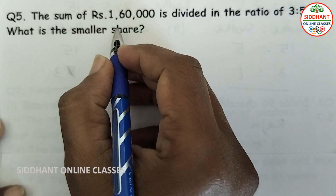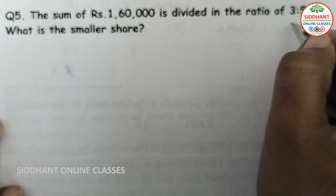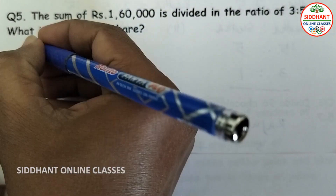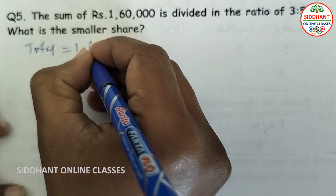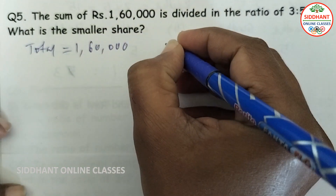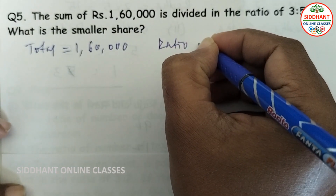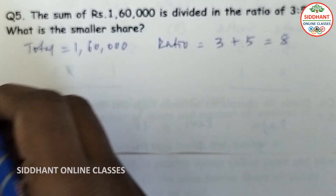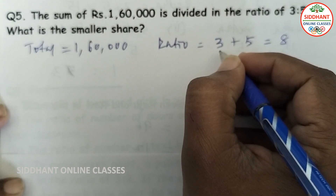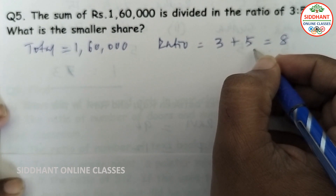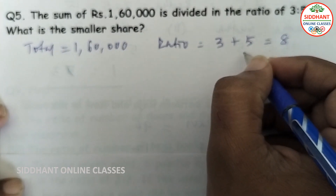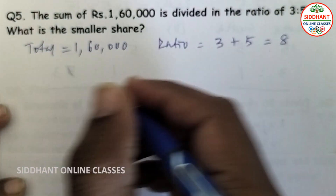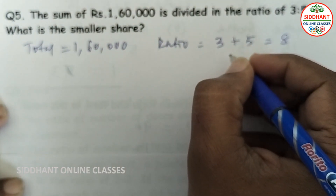Question number 5: A sum of rupees 1,60,000 is divided in the ratio 3 is to 5. What is the smaller share? The total amount is rupees 1,60,000, and the ratio 3 plus 5 gives 8 total parts — one side has 3 parts and the other has 5 parts.